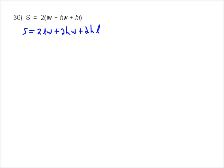We go through and multiply through using the distributive property. Now we need to collect all the h's on one side. If you notice, we already have them right here, so we should just subtract the 2Lw. When we subtract the 2Lw, you get s minus 2Lw equals 2Hw plus 2Hl.